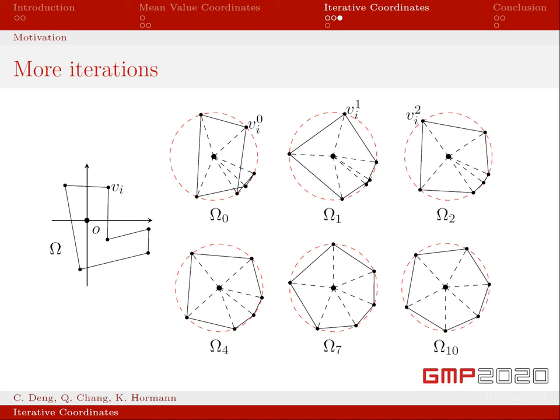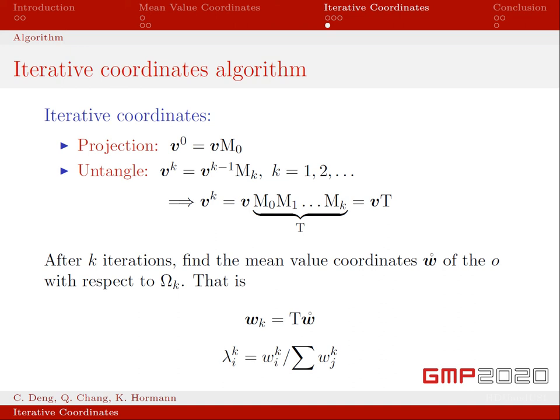Based on the iterative process just described, here we give the mathematical form of the iterative coordinates: projection step and untangle step. Here the w_0 is the mean value coordinates of the origin with respect to the new polygon. The so-defined coordinates have all the GBC properties, and they are guaranteed to be positive for k sufficiently large.